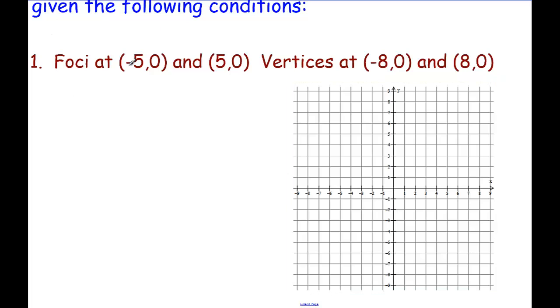All right, so we have the foci at negative five zero and five zero. I'll just label these with a little f to remind myself, and then vertices, which I'll do in red, at negative eight zero and eight zero. Okay, vertices.